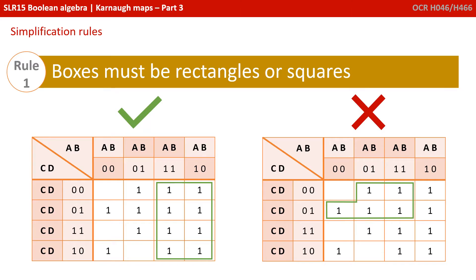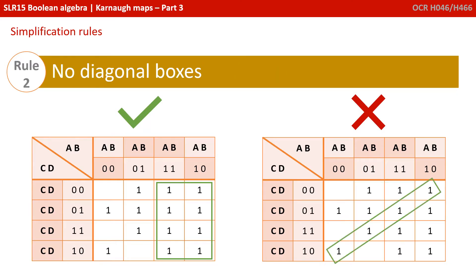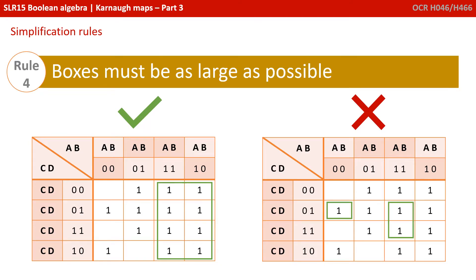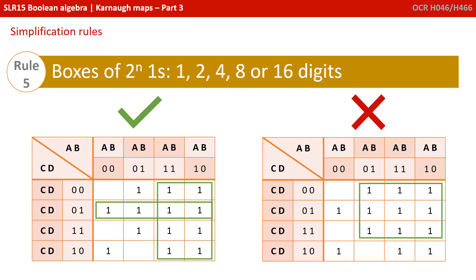First of all, boxes must be rectangles or squares. We're not allowed any diagonal boxes in our maps. Boxes can only contain 1s. They can't contain the blank cells or 0s if you put them in. Boxes must be as large as possible.